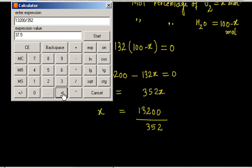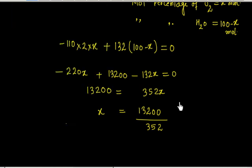This equals 352. So this value is 37.5%. So the mole percentage of oxygen, X for O2, is 37.5%.